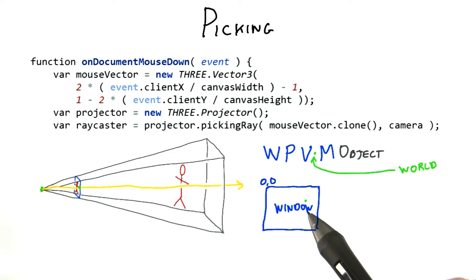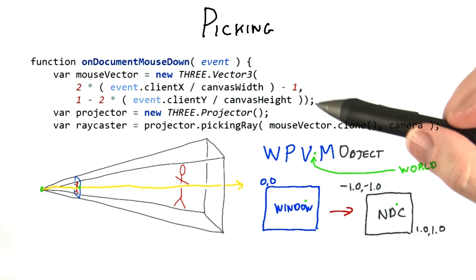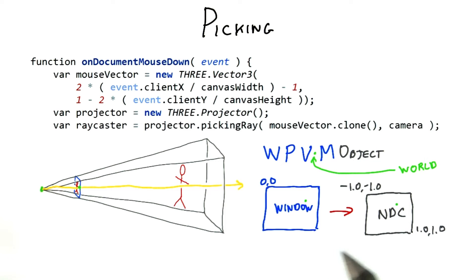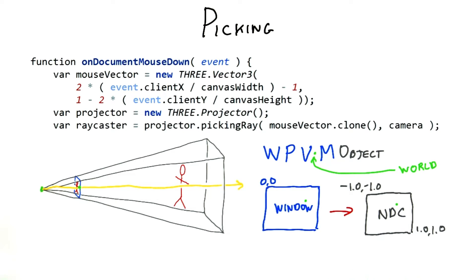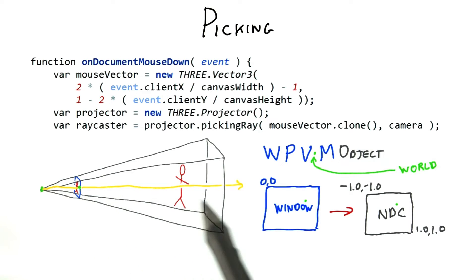The 2D point from the mouse down event is a document object model screen coordinate. This is like a WebGL window coordinate, only y equals 0 is at the top edge of the screen instead of the bottom. The mouse vector code here converts from this screen coordinate system into normalized device coordinates, which go from negative 1 to 1 in x and y. The z value doesn't really matter — any value from z equals negative 1 to 1 will form a point on the ray.